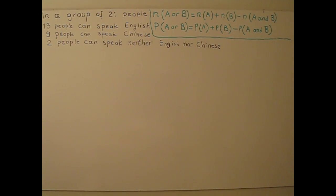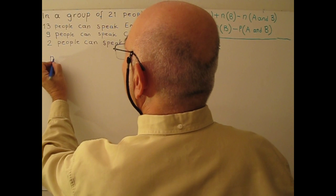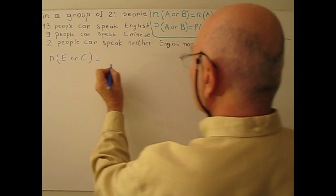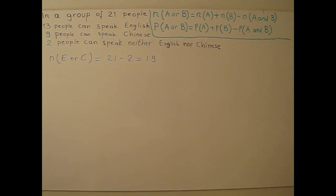Here is another example for Non-Mutually Exclusive events. In a group of 21 people, 13 people can speak English, 9 people can speak Chinese, and 2 people can speak neither English nor Chinese. If a person is selected at random, find the probability that the person can speak English or Chinese.